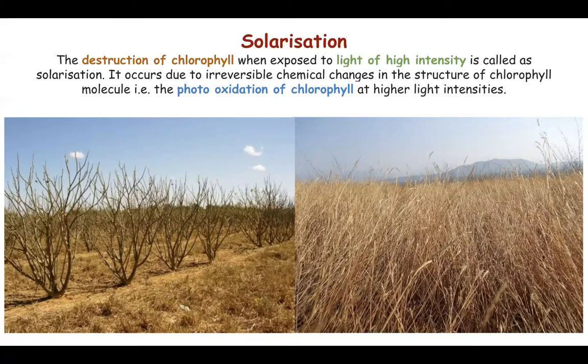Solarization can be used in a beneficial way to remove germs, bacteria, and fungi from soil in a field by exposing it to sunlight. But with regards to photosynthesis in a plant, it is a process which indicates the destruction of chlorophyll. So both etiolation and solarization lead to the death of a plant.